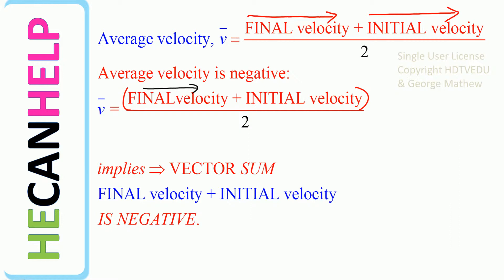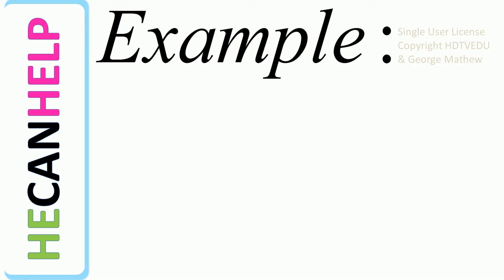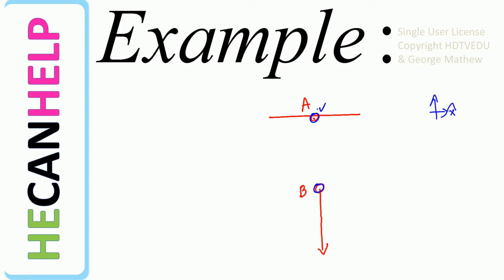Let's look at an example. Say you drop an object from rest. Here is point A and here is point B. At point A, the object is dropped from rest. Positive x is to the right and positive y is vertically up. The object drops from point A to point B with a velocity that is negative.